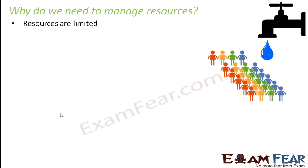Because the resources are limited. Those resources which take a long time to form — we can say they are limited. If you compare resources like air, water, coal, and petroleum: air feels abundantly available, so why manage it? But coal and petroleum take millions of years to form, so they are considered limited and must be managed carefully.